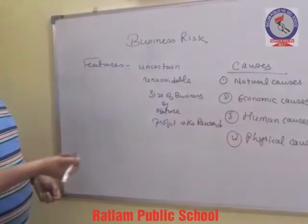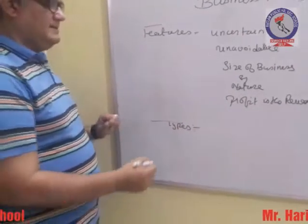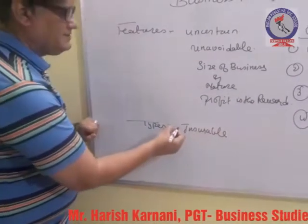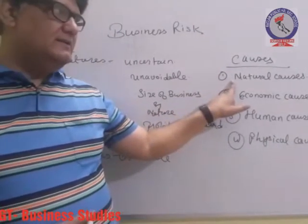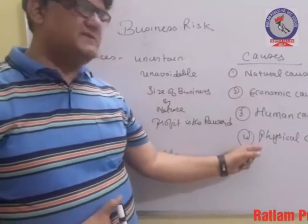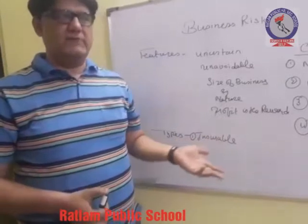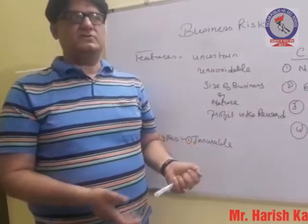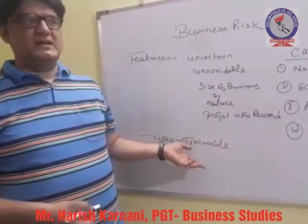Now we move to the types of business risk. The first type is insurable risk, meaning risk which can be insured. We can insure all types of natural risk and risk related with physical reasons. We can get insurance for losses due to natural disasters like flood, earthquake, etc., and we can also insure assets if they are damaged — the insurance company will compensate the claim. This is insurable risk.